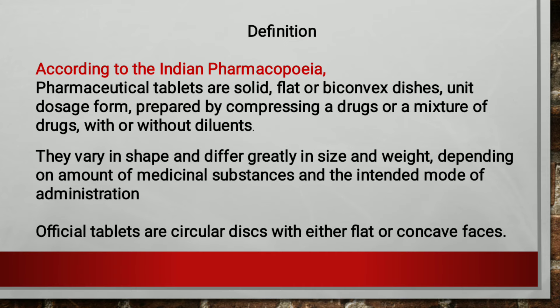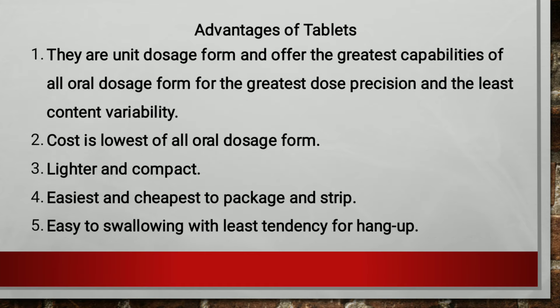According to the Indian Pharmacopoeia, pharmaceutical tablets are solid, flat or biconvex disc unit dosage forms prepared by compressing a drug or a mixture of drugs with or without diluents. They vary in shape and differ greatly in size and weight depending on the amount of medicinal substance and the intended mode of administration. Official tablets are circular discs with either flat or concave faces.